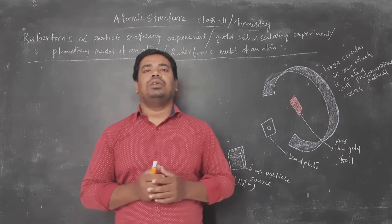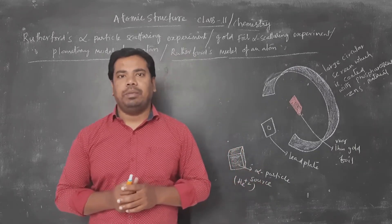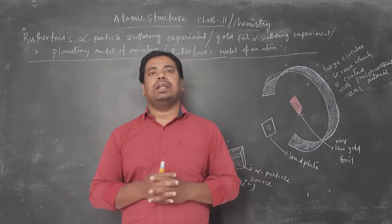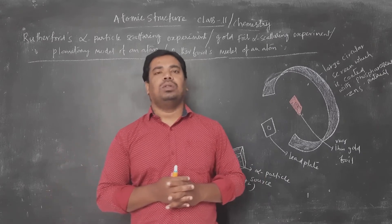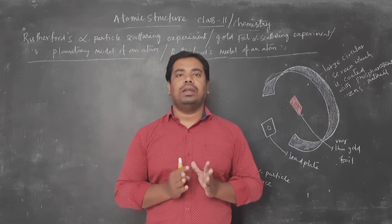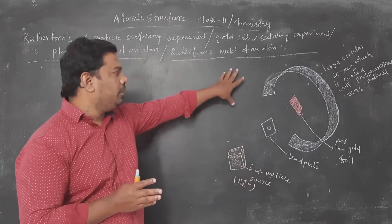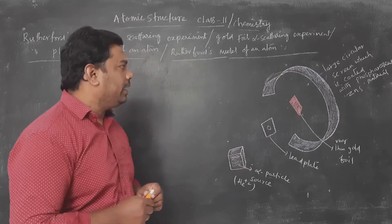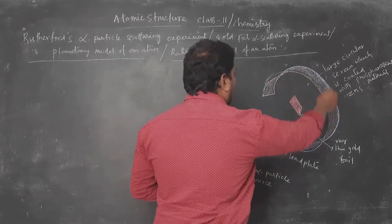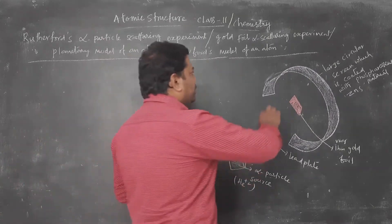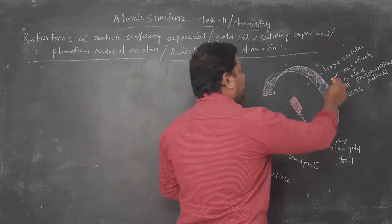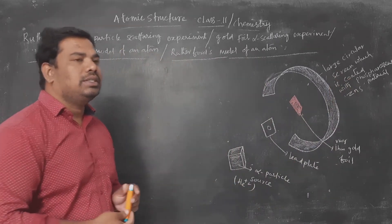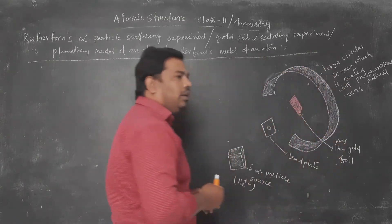The topic is Rutherford's alpha particle scattering experiment, also called the gold foil alpha particle experiment, the planetary model, or Rutherford's model of an atom. You can see this is the setup for the experiment. There is a large circular screen, which is coated with a transparent material — specifically, a zinc sulfide screen is used here.